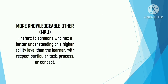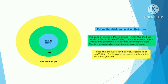More Knowledgeable Other (MKO): Refers to someone who has a better understanding or higher ability level than a learner with respect to a particular task, process, or concept. Zone of Proximal Development (ZPD): Things the child can do alone (blue); things the child can do with a bit of help or scaffolding, such as prompted with leading questions or watching an example (green — ZPD, where learning and growth occur); and things the child just cannot do yet regardless of scaffolding, such as advanced mathematics for a 5-year-old (yellow).